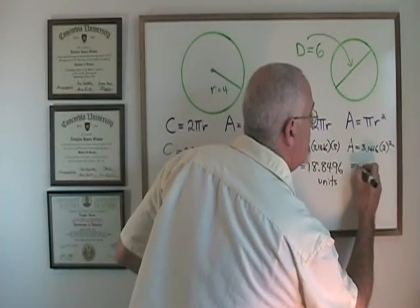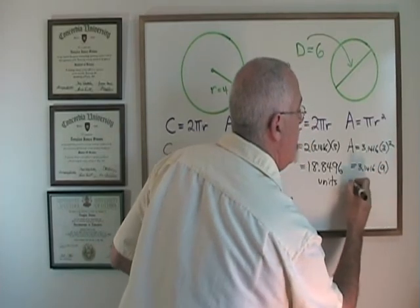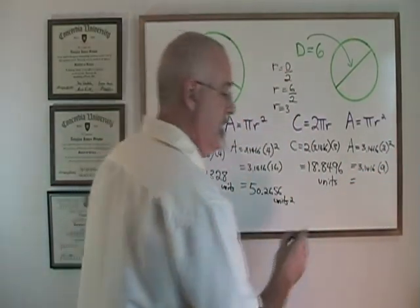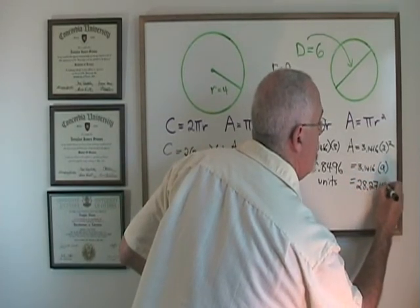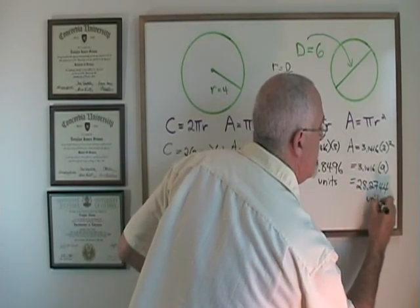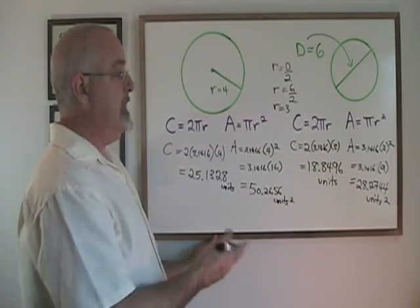So I have area equals 3.1416 times 9. My answer then is 28.2744 units squared. Remember that area always has square units.